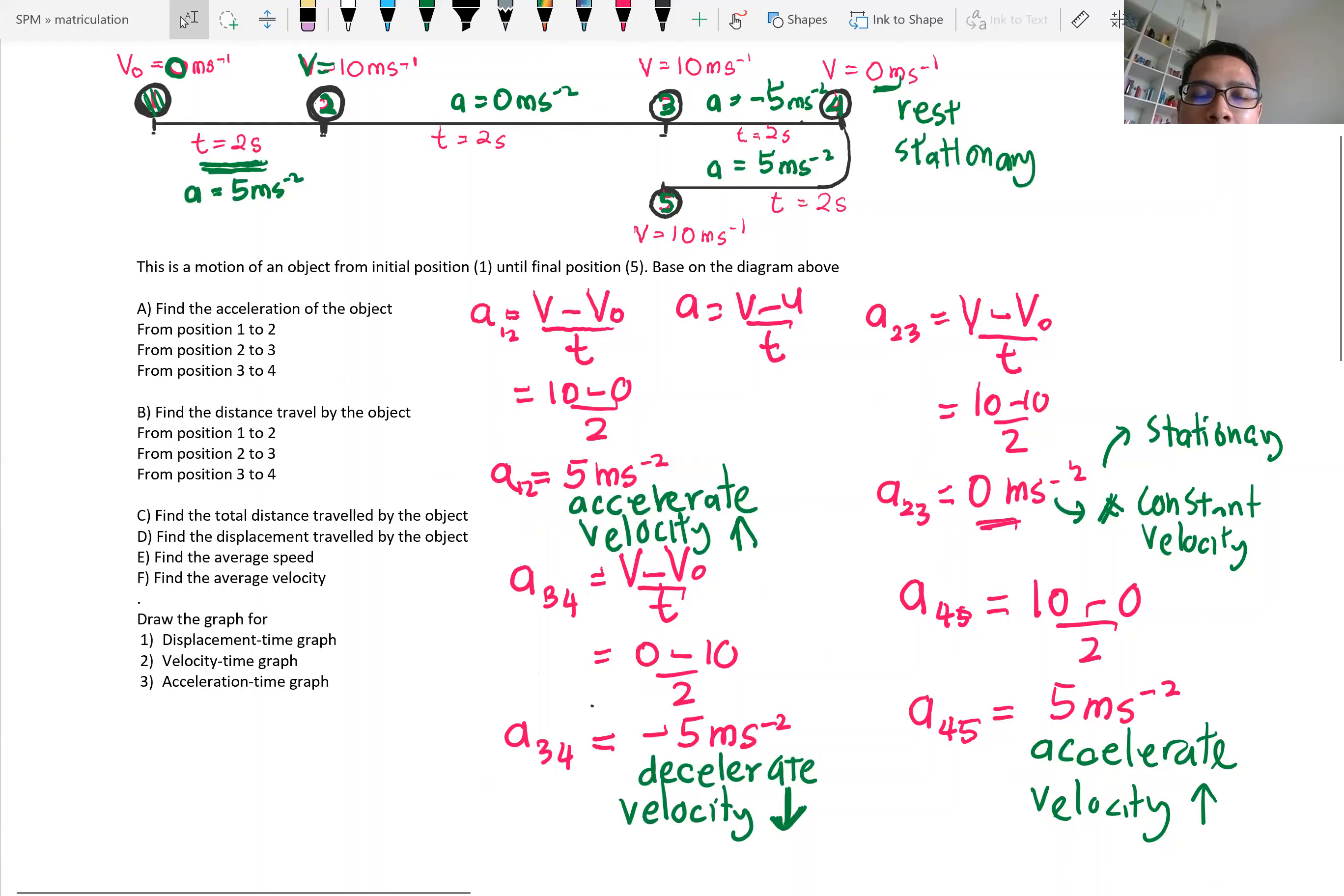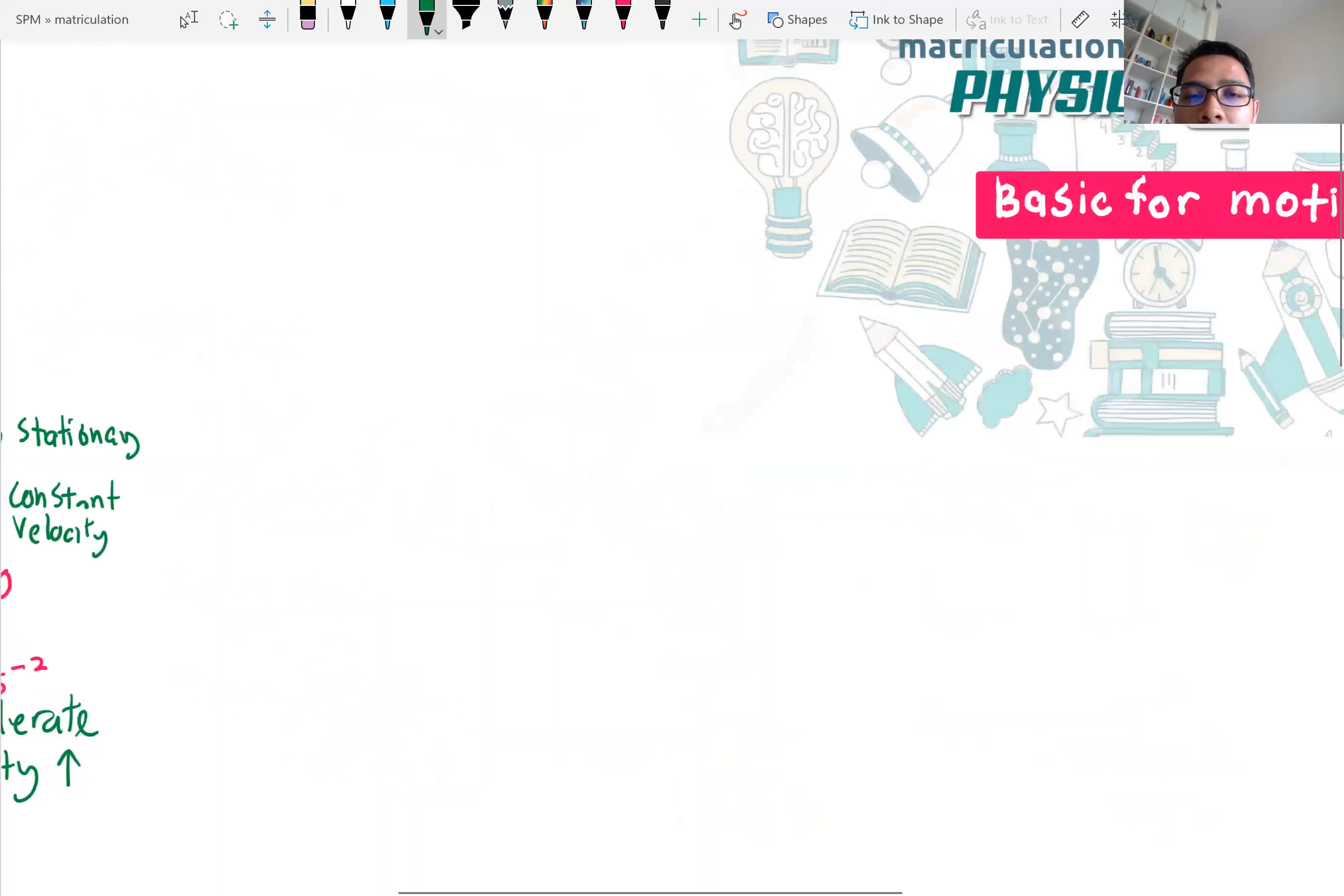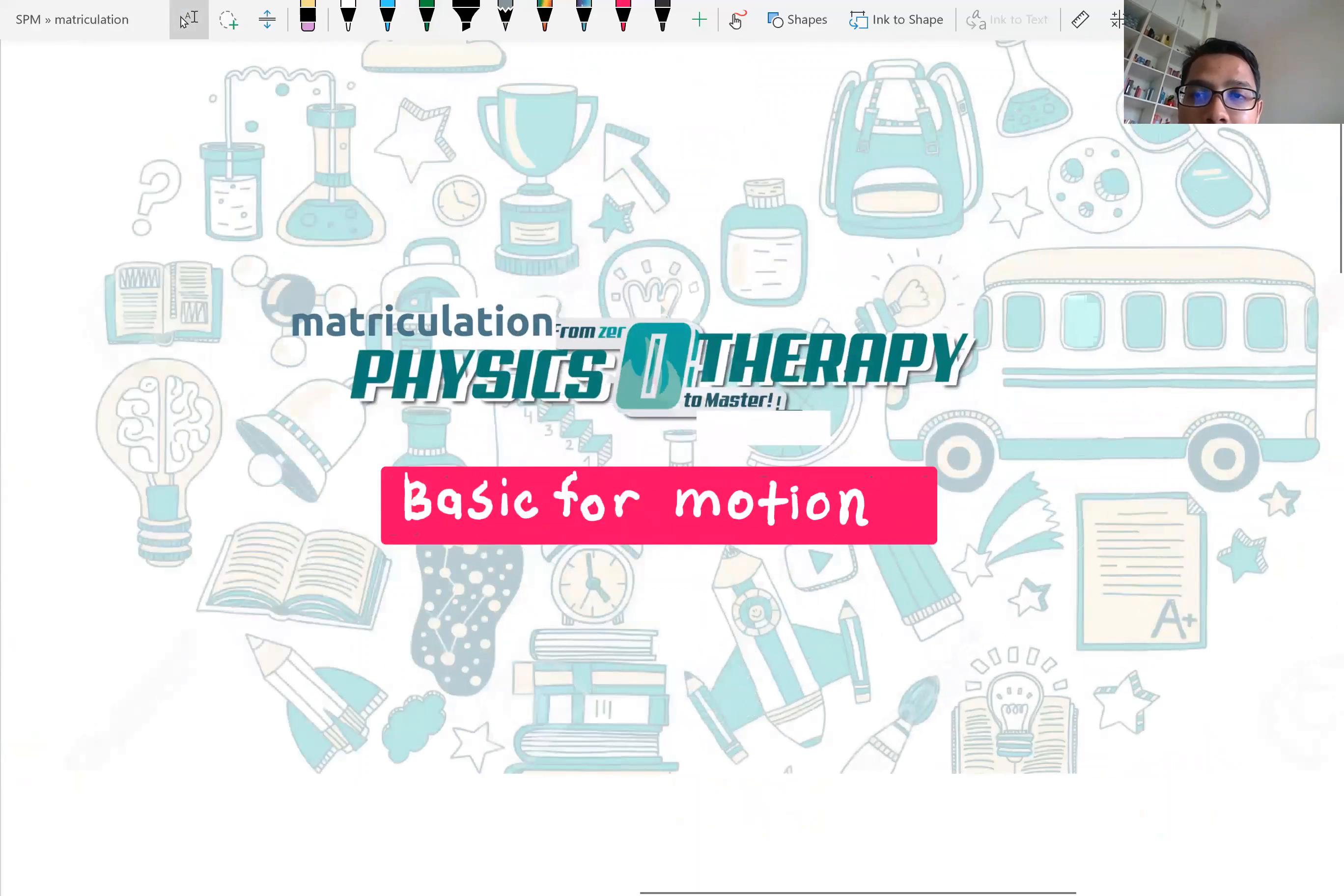That is about the acceleration. So here, we're done discussing this. On the next video, we will discuss number 2, which is how to find the distance traveled and how to find the displacement of this object. So hope this makes you clear a little bit about acceleration and see you again on the next video, where I will discuss on how to find the distance and the displacement of the object.